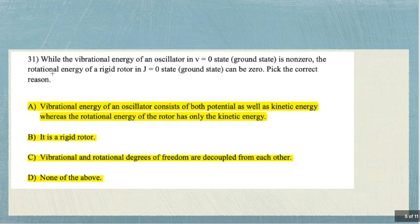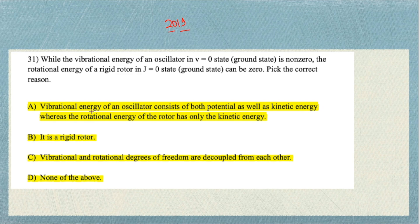A related question from TIFR 2019 asks: while the vibrational energy of an oscillator at V=0 (ground state) is non-zero, the rotational energy of a rigid rotor at J=0 can be zero — pick the correct reason. This has just been explained in the previous question. Try to answer this in the comments below as a homework exercise.